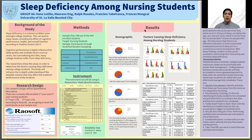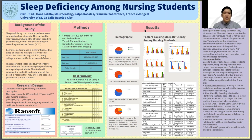Background of the study. Sleep deficiency is a common problem seen amongst college students. This can lead to many issues including the effect on cognitive performance, health, and overall function, according to Heather Owens, 2017. Cognitive performance is highly influenced by sleep quality and multiple factors such as stress, but contradicting this idea, many college students suffer from sleep deficiency. The researchers chose this study to determine the factors causing sleep deficiency among college students, and the study will enhance the in-depth understanding of the possible reasons that may affect the academic performance of students.